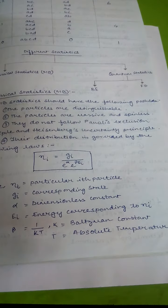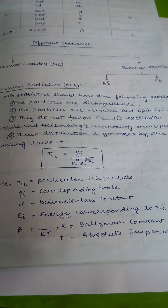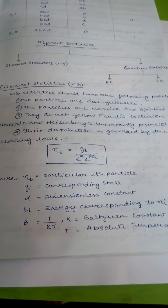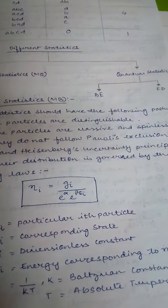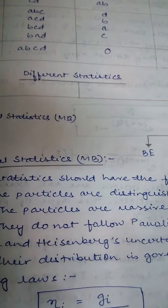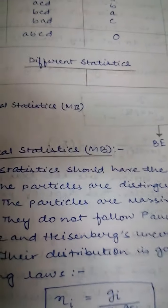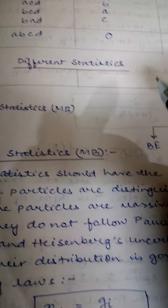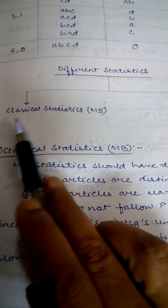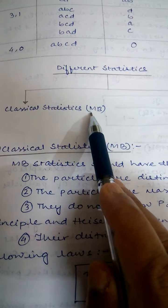In this lecture, I will describe different types of statistics, their properties, and their applications. Statistics means the way of distribution of particles in different compartments. There are basically two types of statistics: one is called classical statistics, or Maxwell-Boltzmann statistics, in short MB statistics.